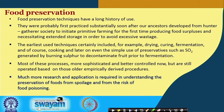Food preservation techniques have a long history of use. They were probably first practiced substantially soon after our ancestors developed from hunter-gatherer society to initiate primitive farming, producing food surpluses and necessitating extended storage to avoid wastage. The earliest technologies certainly included drying, curing, fermentation, cooking, and later even simple chemical preservatives such as sulfur dioxide — generated by burning sulfur — to decontaminate fruits prior to their fermentation.